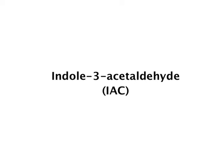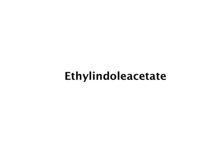The next is indole-3-acetaldehyde (IAC). It is an aldehyde derivative of IAA and occurs naturally as an auxin precursor which can be converted into IAA. The next is ethyl indole-3-acetate. It is the ethyl ester derivative of IAA and has been isolated from many plant tissues, and it occurs as an auxin precursor which can be converted into IAA.